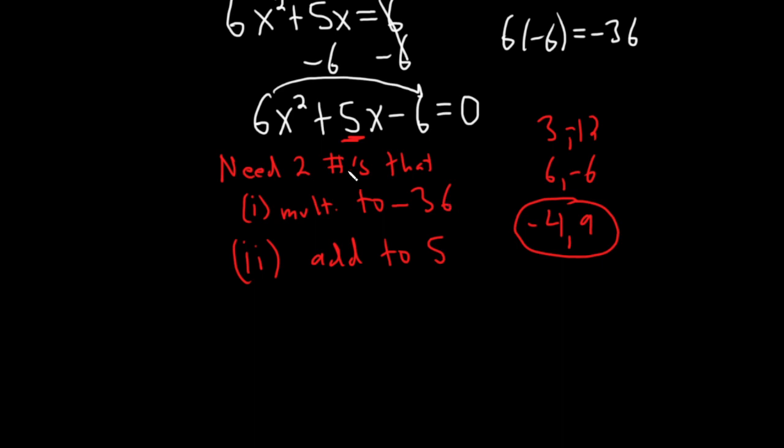But now what we do is we write down our problem again, 6x squared. And then you basically break this up, okay? You break this up and you use these numbers. So I'm going to go ahead and put, I guess I'll put the 4 first. So this is minus 4x plus 9x minus 6 equals 0. So you see, all we've done is we've taken this 5x and we've broken it up into negative 4x plus 9x.